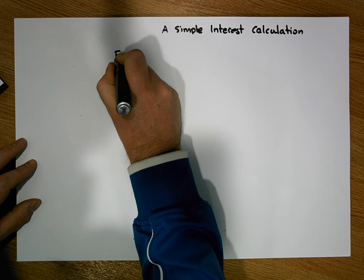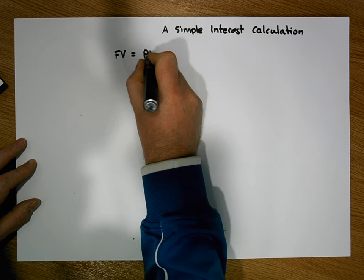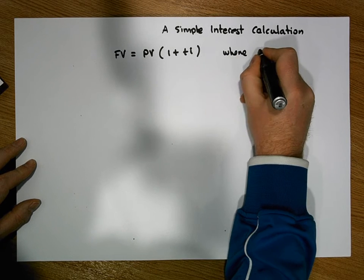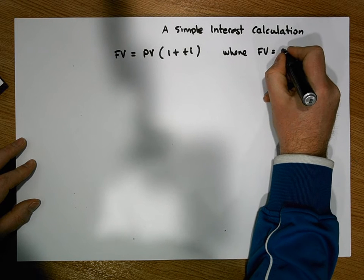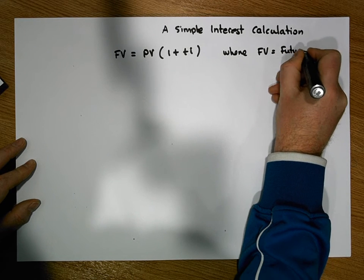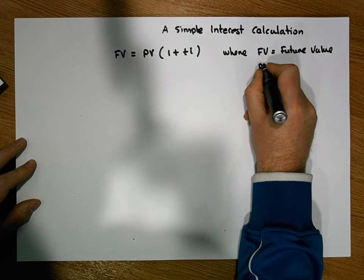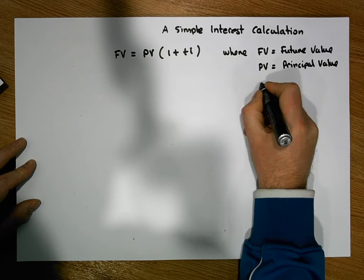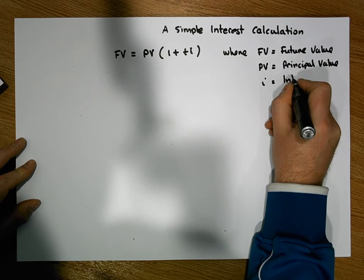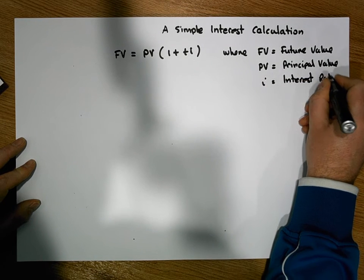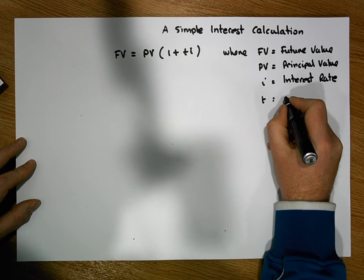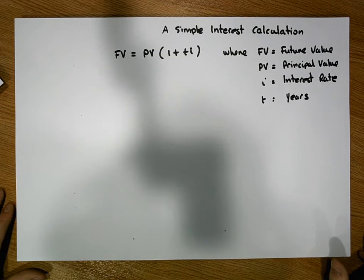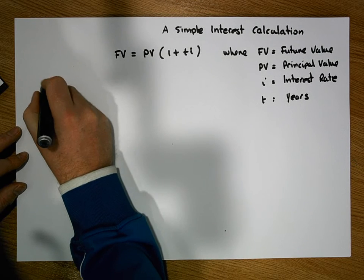Let's keep in mind that our formula is: the future value is equal to the principal value times one plus T times I. FV represents the future value of the account, PV represents the principal value of the account, I represents the interest rate, and T represents the number of years elapsed.